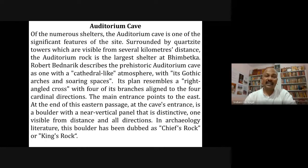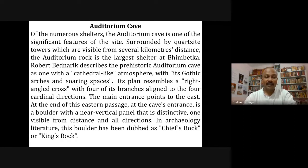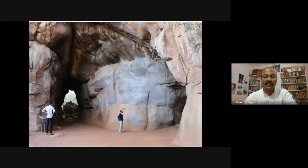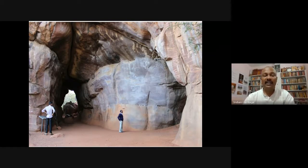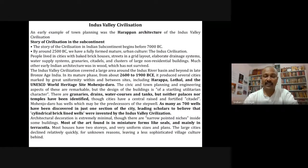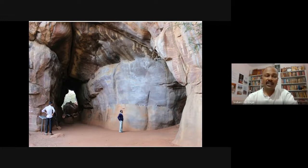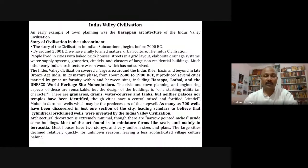One example of early architecture is the Auditorium Cave at Bhimbetka — the largest rock shelter, sometimes called the 'King's Rock' in archaeology. This auditorium cave may have served a group of people who made changes as per their needs. We can see examples from the Paleolithic period through to the late medieval period at this site.